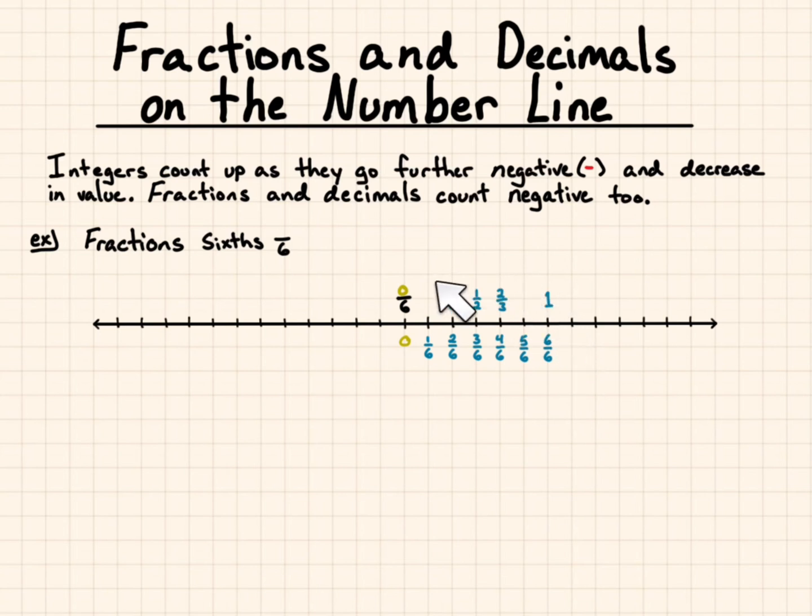Good to note that we have 0 halves, 1 half, and 2 halves. We have 0 thirds, 1 third, 2 thirds, 3 thirds. So just as we're counting by sixths on the bottom, you could also count by thirds or halves on the top and keep it going. And it keeps going for positive infinity.